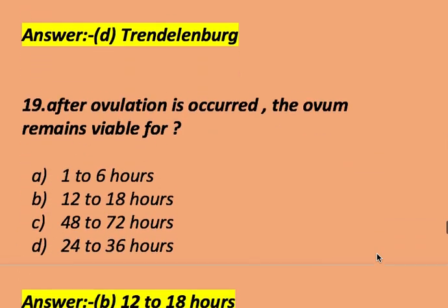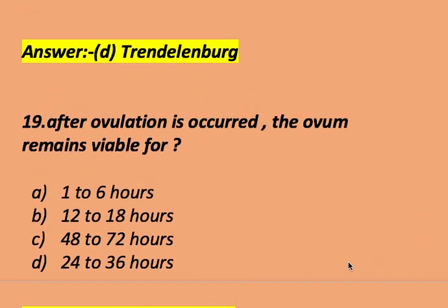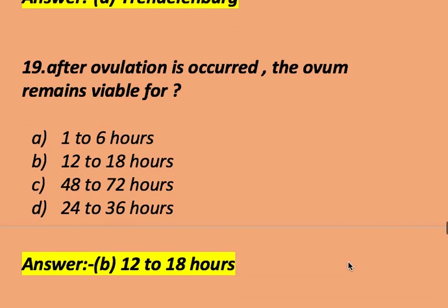After ovulation occurs, the ovum remains viable for: 1 to 6 hours, 12 to 18 hours, 48 to 72 hours, or 24 to 36 hours. The right answer is 12 to 18 hours. After ovulation, the ovum remains viable for 12 to 18 hours.